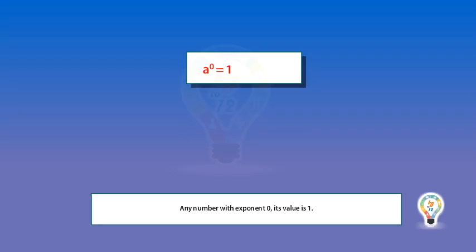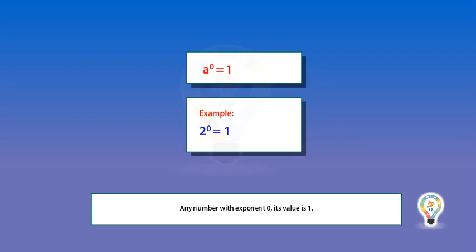Next law is that any number with exponent 0 has a value of 1. For example, 2 to the power 0 equals 1.